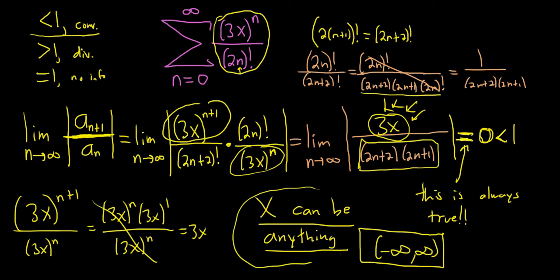So x can be anything. So your interval of convergence is all real numbers. In other words, negative infinity to infinity. That's it. Good luck.